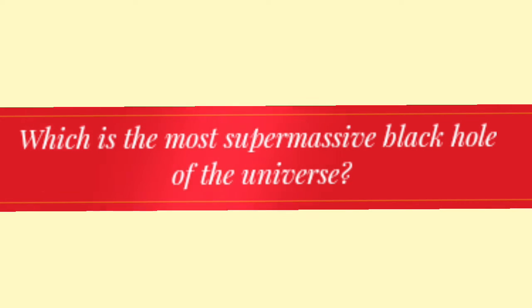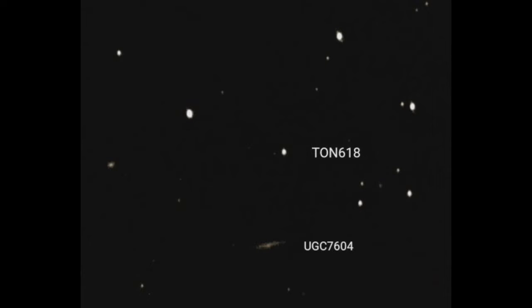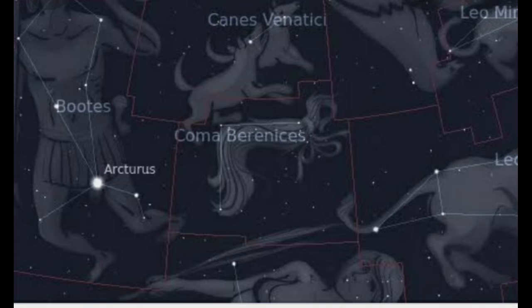What is the most supermassive black hole of the universe? The most supermassive black hole of the universe is TON 618, with a mass of 6.6 times 10 to the power 10 times the mass of the sun. It is located at a distance of approximately 18.2 billion light years. It is located near the border of constellations Canes Venatici and Coma Berenices.